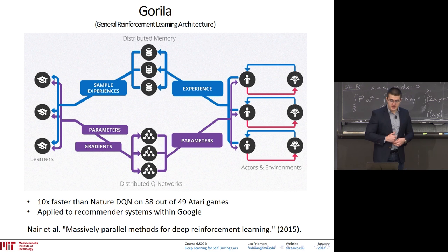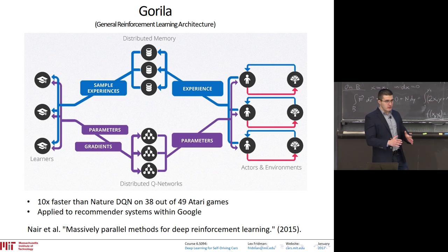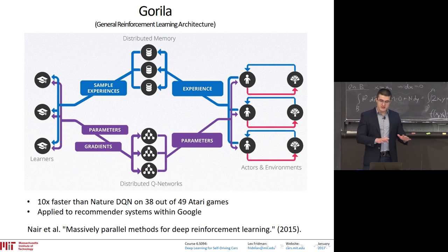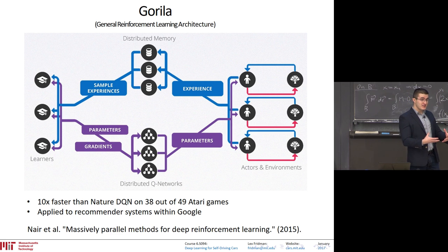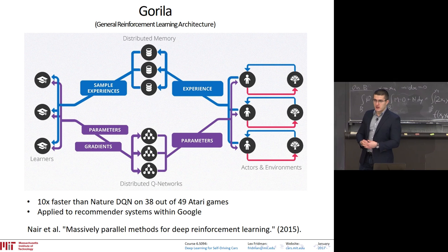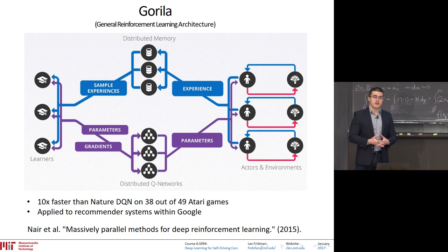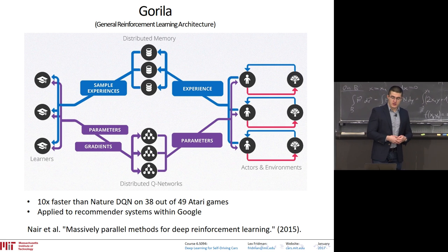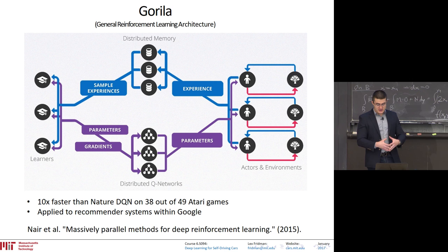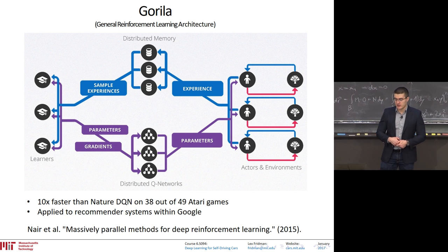One improvement is the General Reinforcement Learning Architecture, called Gorilla. In the simulated world, you can run deep reinforcement learning in a distributed way — both the simulation and the learning distributed. You can generate experiences from human beings or simulation. AlphaGo, for instance, learned from both expert games and by playing itself. Gorilla has achieved better results than the original DQN network.